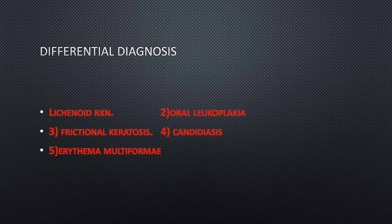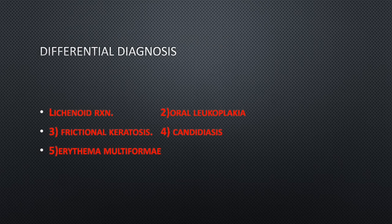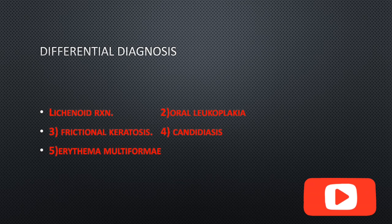The differential diagnosis of oral lichen planus includes lichenoid reaction, which typically occurs on one side, whereas lichen planus is bilateral; lichenoid reaction is also usually caused by dental materials. Oral leukoplakia is caused mostly by smoking, while oral lichen planus is immunological. Frictional keratosis involves a history of trauma or cheek biting, which is absent in lichen planus. Candidiasis is a fungal disease, and erythema multiforme is another immunological disease that resembles oral lichen planus.